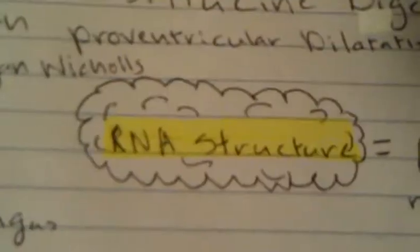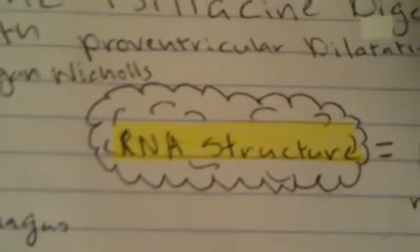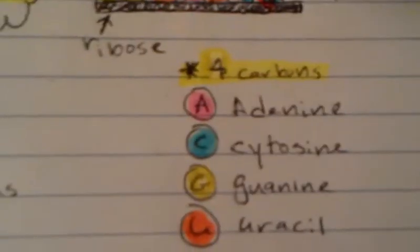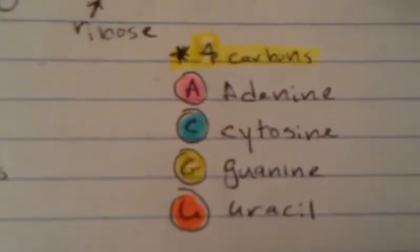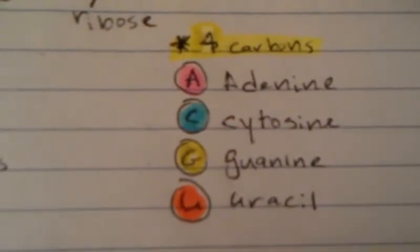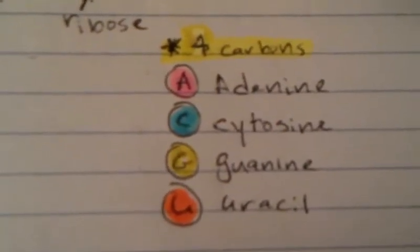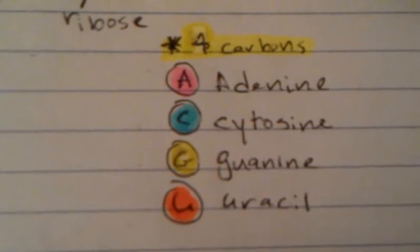First, let's review the RNA structure. There are four bases: adenine, cytosine, guanine, and uracil.